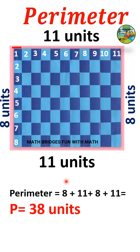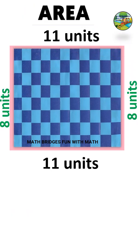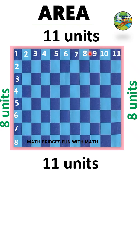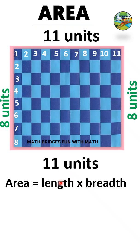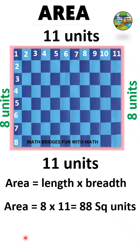To find the perimeter, sum all the sides: 8 plus 11 plus 8 plus 11 equals 38 units, which is the perimeter of the quilt. To find the area, you multiply the sides: 8 into 11 equals 88 square units.